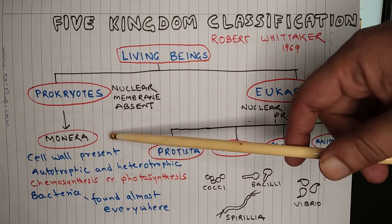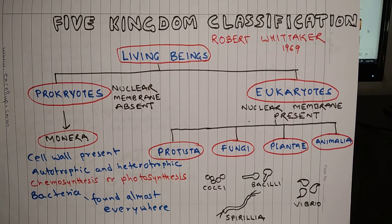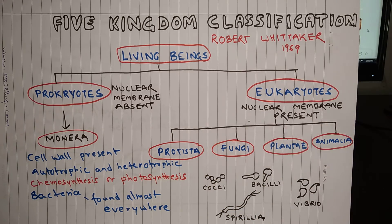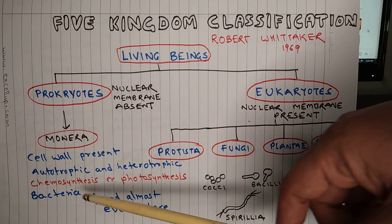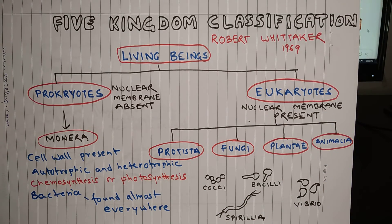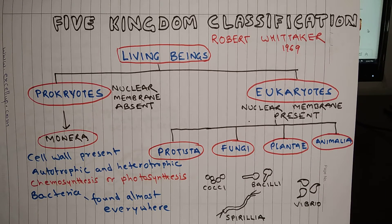Monera is commonly known as bacteria — all bacteria belong to this kingdom. Key features of kingdom Monera: cell wall is present and is made of peptidoglycan. Bacteria can be autotrophic or heterotrophic; heterotrophic bacteria are parasites or saprophytes, while autotrophic bacteria can be chemosynthetic or photosynthetic. Bacteria are found almost everywhere on Earth, including on or inside the body of living beings. Bacteria can be classified by shape: cocci, bacilli, vibrio, and spirilla.